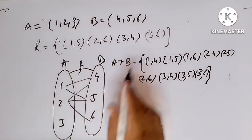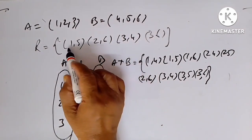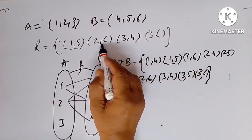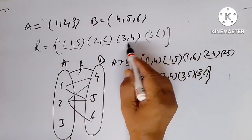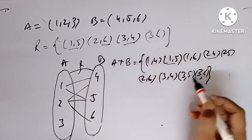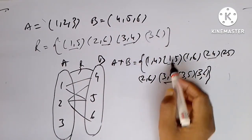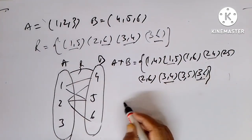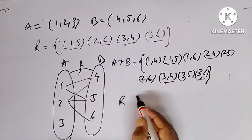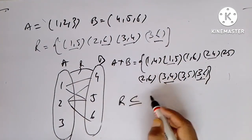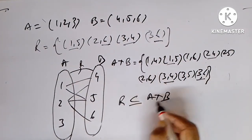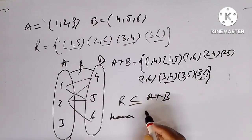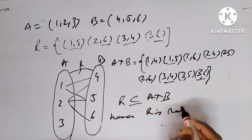Now this is R. What we see here is: (1,5) is here, (2,6) is here, (3,4) is here, (3,6) is here. Therefore R is a subset of A cross B. Hence R is a relation.